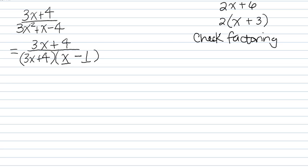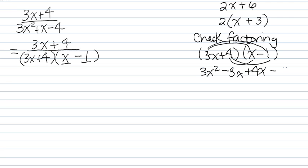So we have 3x plus 4 times x minus 1. First is 3x squared. Outer is minus 3x. Inner is plus 4x. And last is minus 4. These two combine together to give you a positive x. We have 3x squared and then minus 4, which is what we started with over here. So we're good.